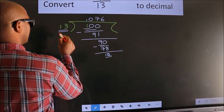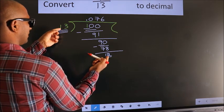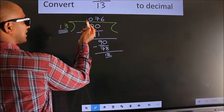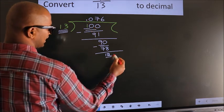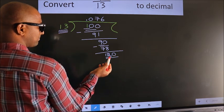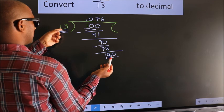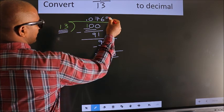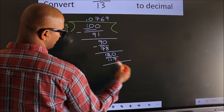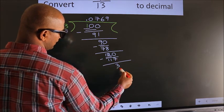We have 12 here. 12 is smaller than 13, and we already have the decimal so we can directly bring a 0 — so 120. A number close to 120 in the 13 times table is 13×9=117. Now we subtract and we get remainder 3.